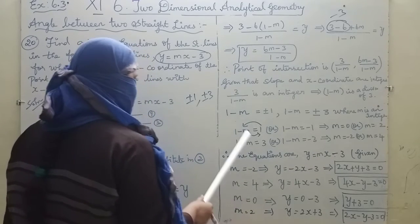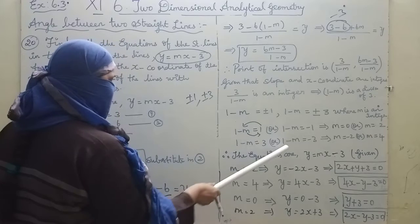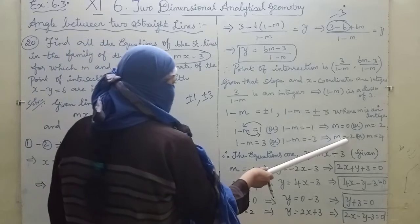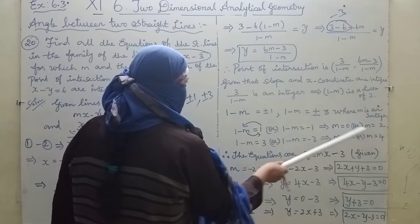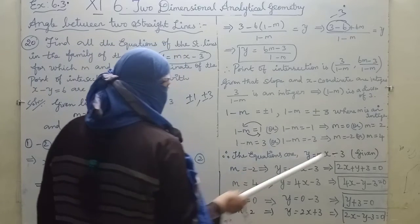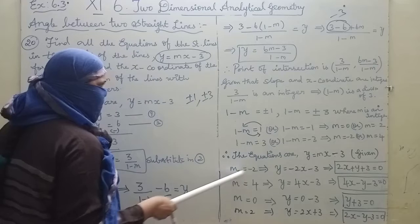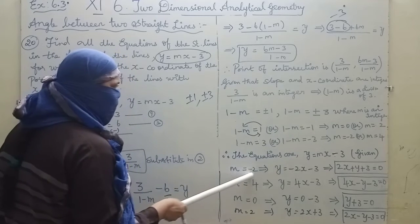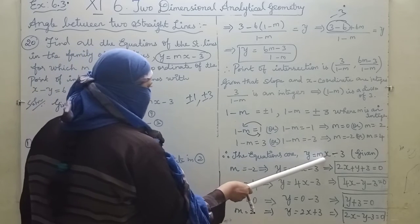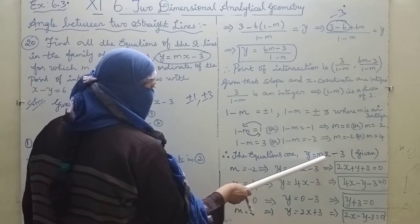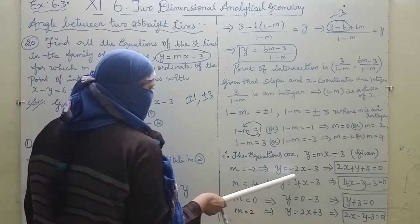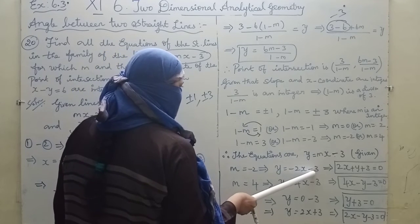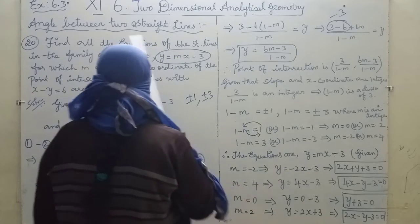Now we substitute each m value into y = mx - 3. First, m = -2 gives y = -2x - 3.